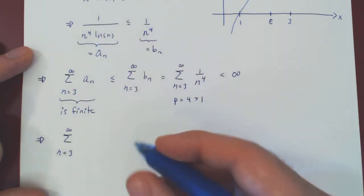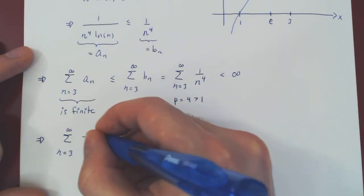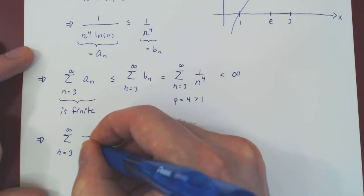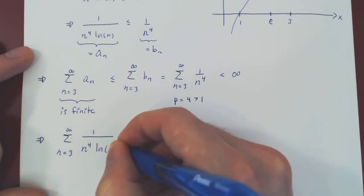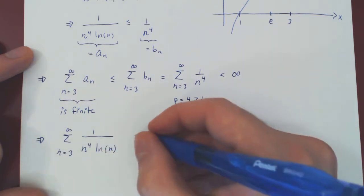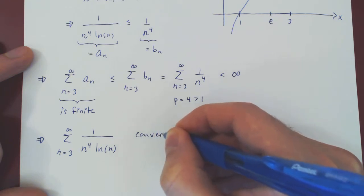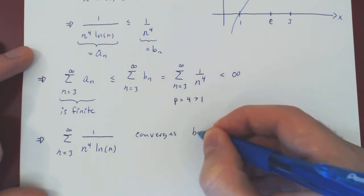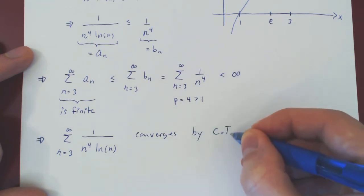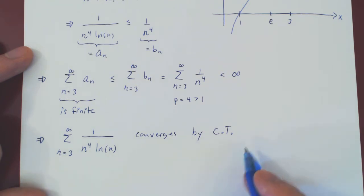And we can rewrite a_n explicitly as 1 over n to the 4 ln of n. So, this series converges by the comparison test. And we're done. Or, are we?